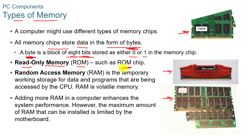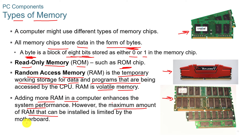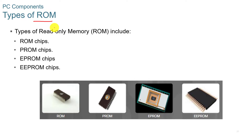Read-only memory or ROM chips are pre-programmed chips usually soldered or permanently attached to the motherboard — they're not removed. Random access memory or RAM is temporary working storage for data and programs being accessed by the CPU, and it's what we consider volatile memory — if you turn the power off, you lose what was in RAM. Adding more RAM enhances system performance; however, the maximum amount of RAM that can be installed is limited by the motherboard. When purchasing components, make sure the type of RAM is compatible with your motherboard.